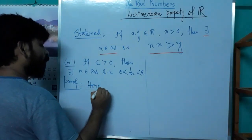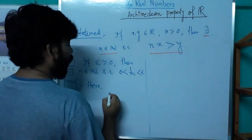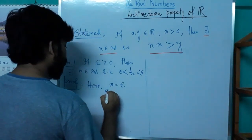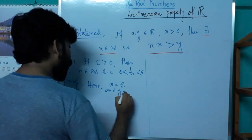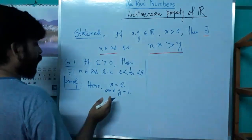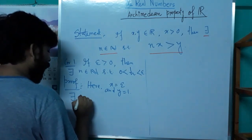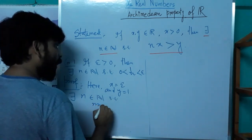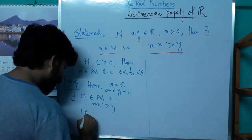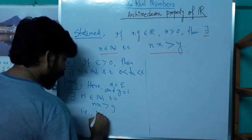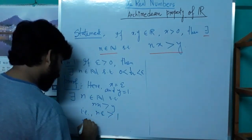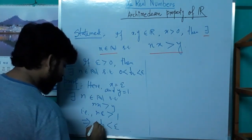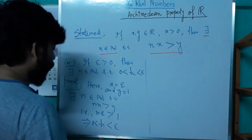Here, set x = ε and y = 1. By applying the Archimedean property, there exists a natural number n ∈ ℕ such that n·x > y, that is n·ε > 1. Therefore 1/n < ε, and since n is a natural number, 0 < 1/n < ε.